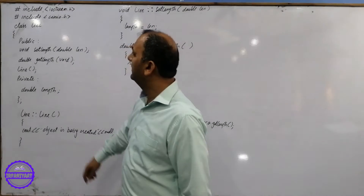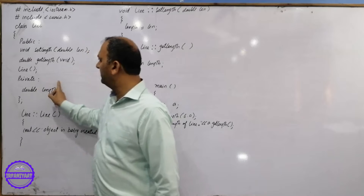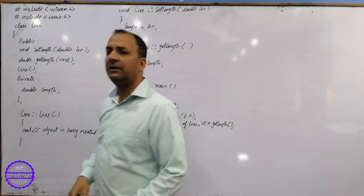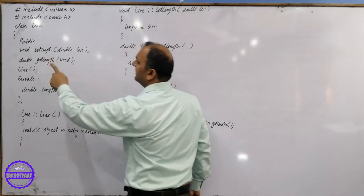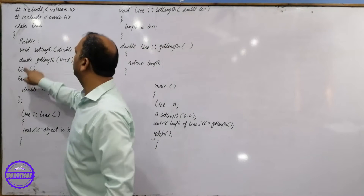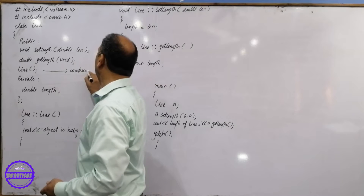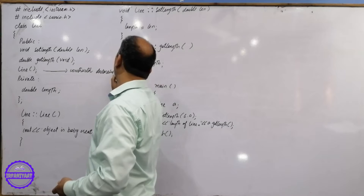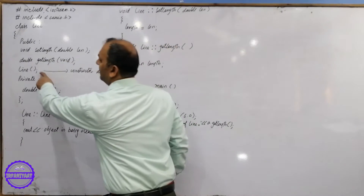In public, we have 3 member functions declared. The first member function is set length, the second is get length, and the third is line. This is what we call a constructor declaration. This is a function declaration and this is a special member function.